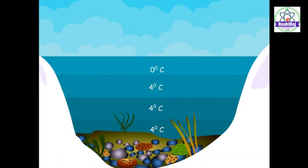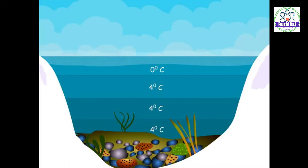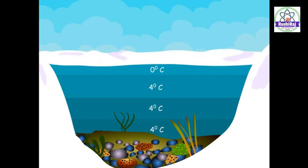The temperature of this surface water goes on decreasing to 0 degrees Celsius, and finally it is converted to ice. As ice is a bad conductor of heat, the water below the ice remains at 4 degrees Celsius. As a result, fish and other aquatic animals and plants remain alive in the water.